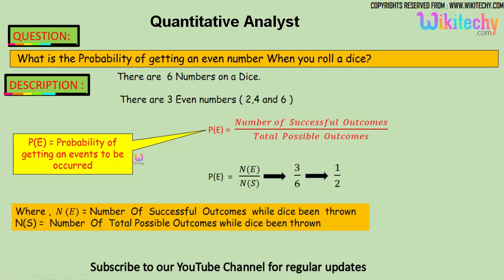So three is the number of successful outcomes, divided by the possible outcomes which is six. So three by six, you get one by two.